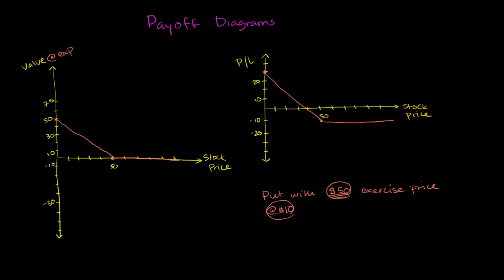Once again, this payoff diagram just incorporates the price of the option, so it's the actual profit. This is just the value at expiration, depending on what the value of the stock is at expiration.